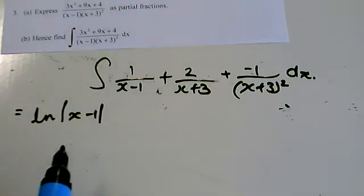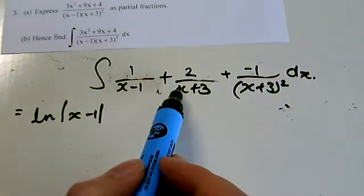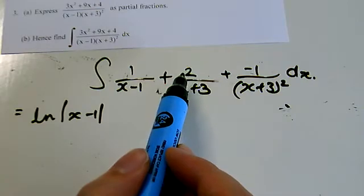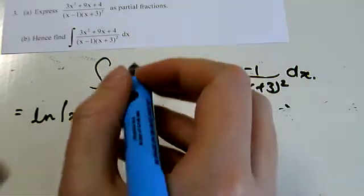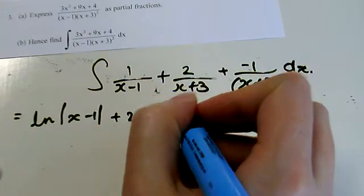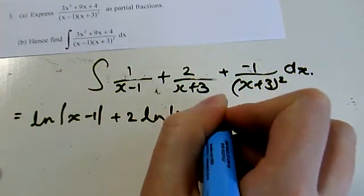The second one, the differential of x plus 3 is 1. I've got 2 on the top, so I've got twice as much as I need. So it's twice ln absolute value of x plus 3.